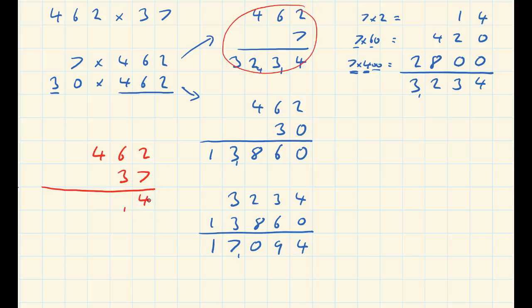So 7 times 2 is 14. 7 times 6 is 42 plus that 1 makes 43. So I've got the 3, carry the 4. 7 times 4 is 28 plus that 4 there, 28, 29, 30, 31, 32. I've times by the 7, so I've done that bit. Now I've got times by 3, but it's not 3, it's 30. So I need to add the 0 first for the 30. And now 3 times 2 is 6, 3 times 6 is 18, 3 times 4 is 12 plus that 1 makes 13.